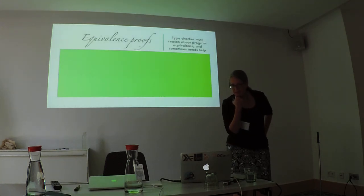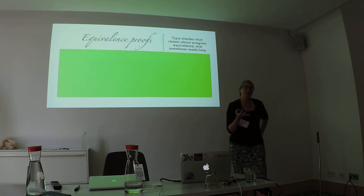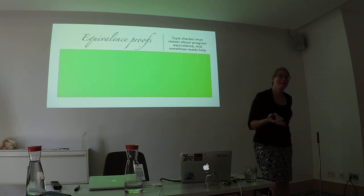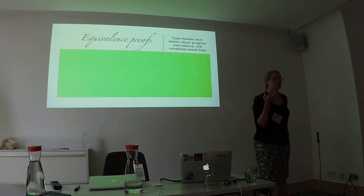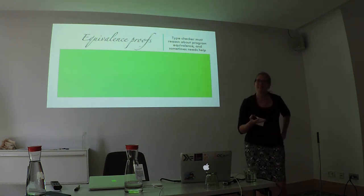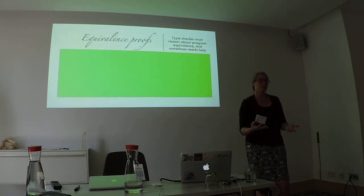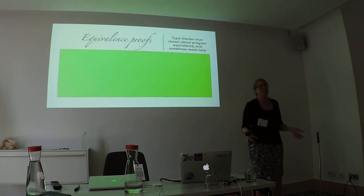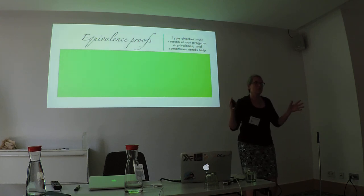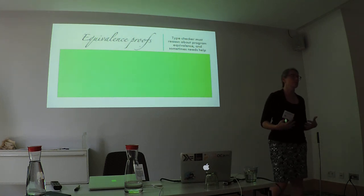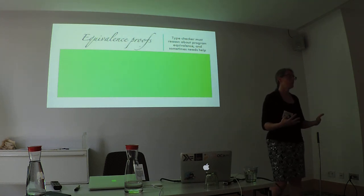The fourth component is proofs. Once you make your type language richer — when your type checker runs, it needs to compare types. But now we have programs in our types. How do we know those programs are equal to each other? Program equivalence is a hard problem. The Haskell compiler is really smart but it can't do everything automatically. It's going to need a little bit of help to know why two types are equal to each other — and we call that help a proof.